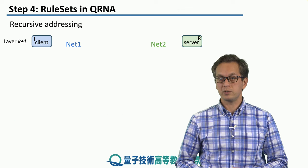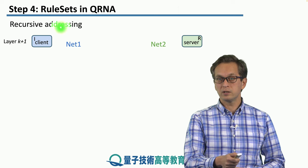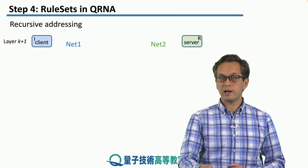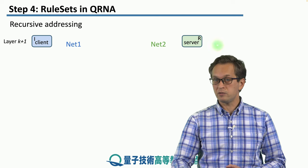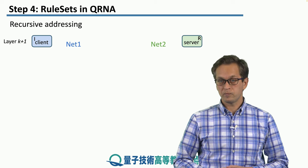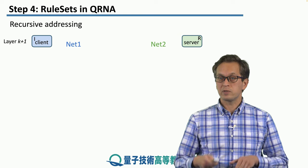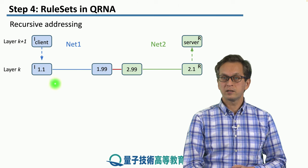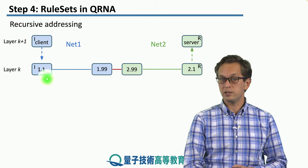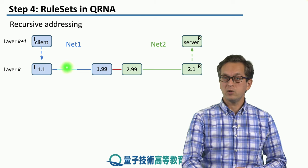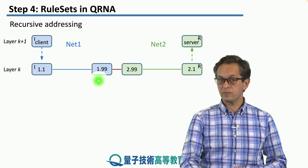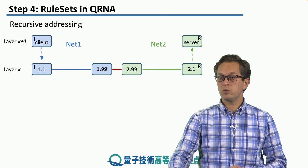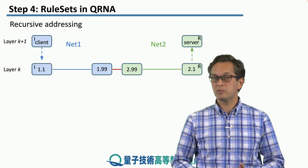Let's see how it works with a few pictures. Let's say that our client in network one is the initiator at layer K plus one, and the client would like to engage with a quantum server, which is the intended responder at the same level, located in network two. The client cannot directly connect to the server, so the client recurses to lower layer K. At this layer, the address for the initiator is 1.1, and we know we need to go through a border router at 1.99 for network one, and border router 2.99 for network two. Finally, we reach the new responder at layer K given by address 2.1.